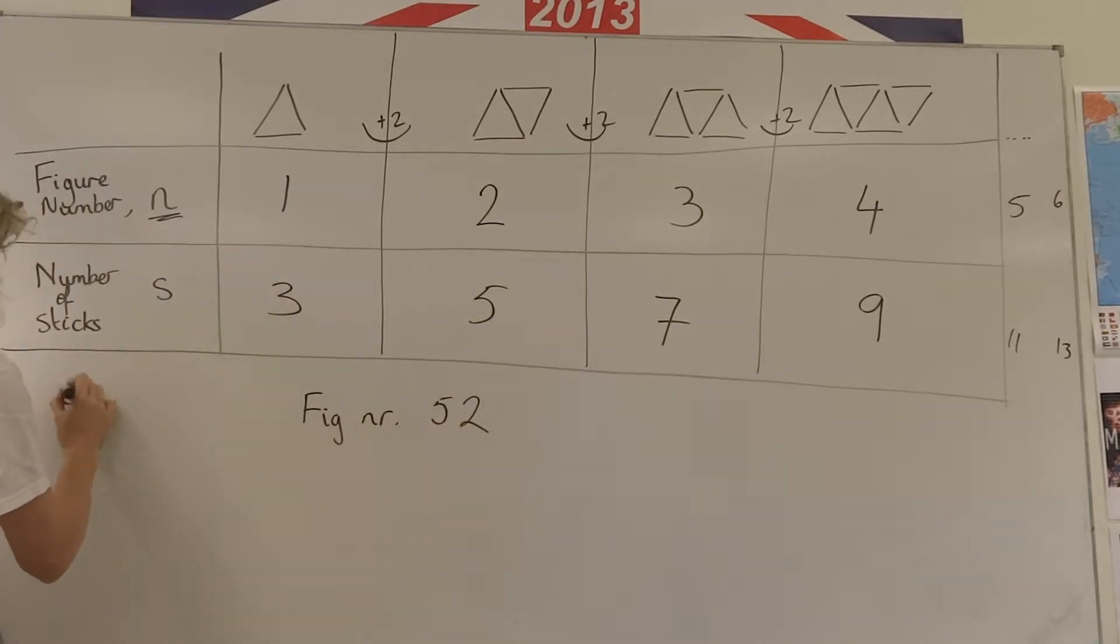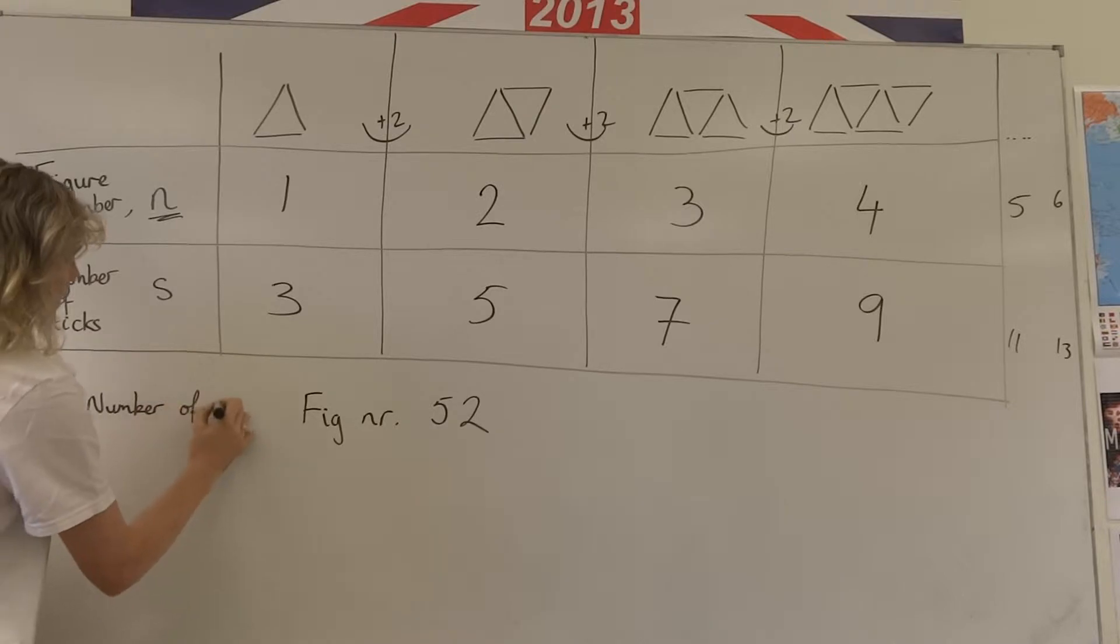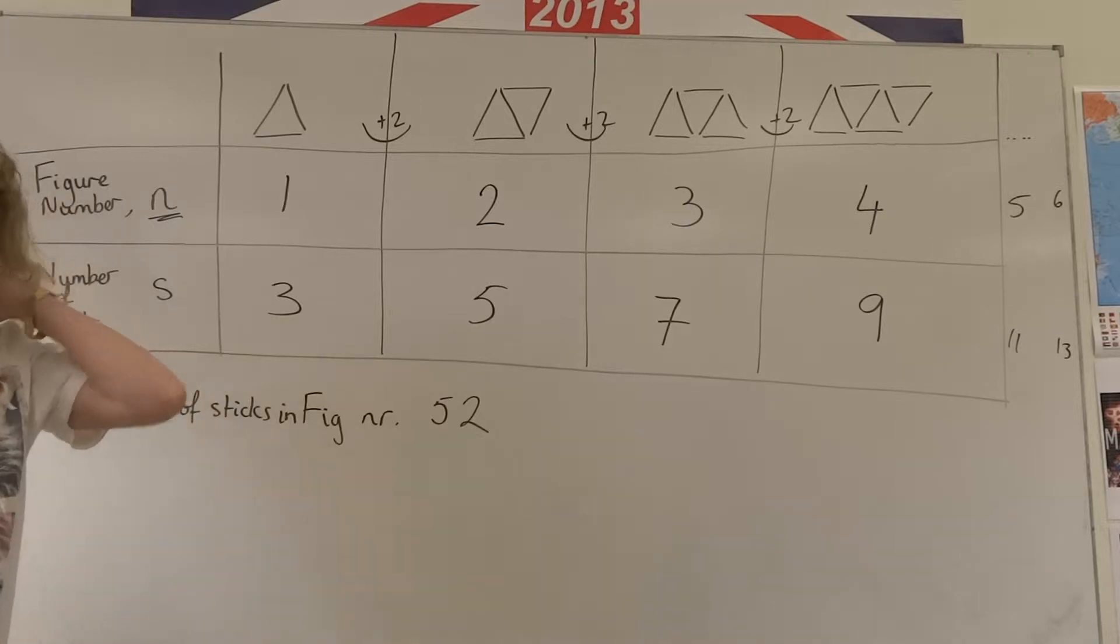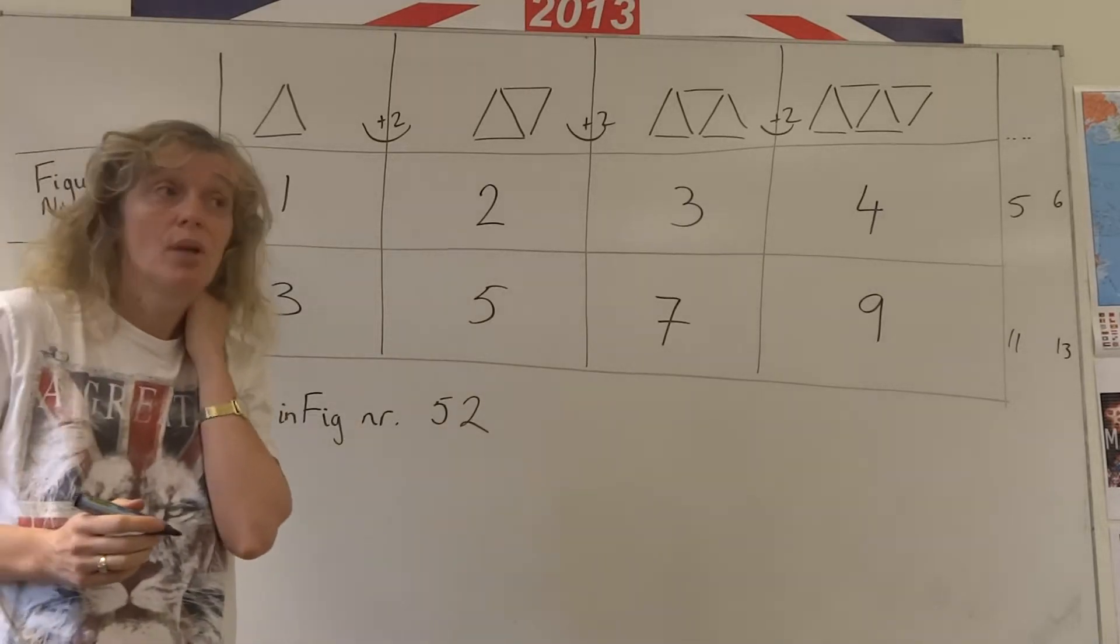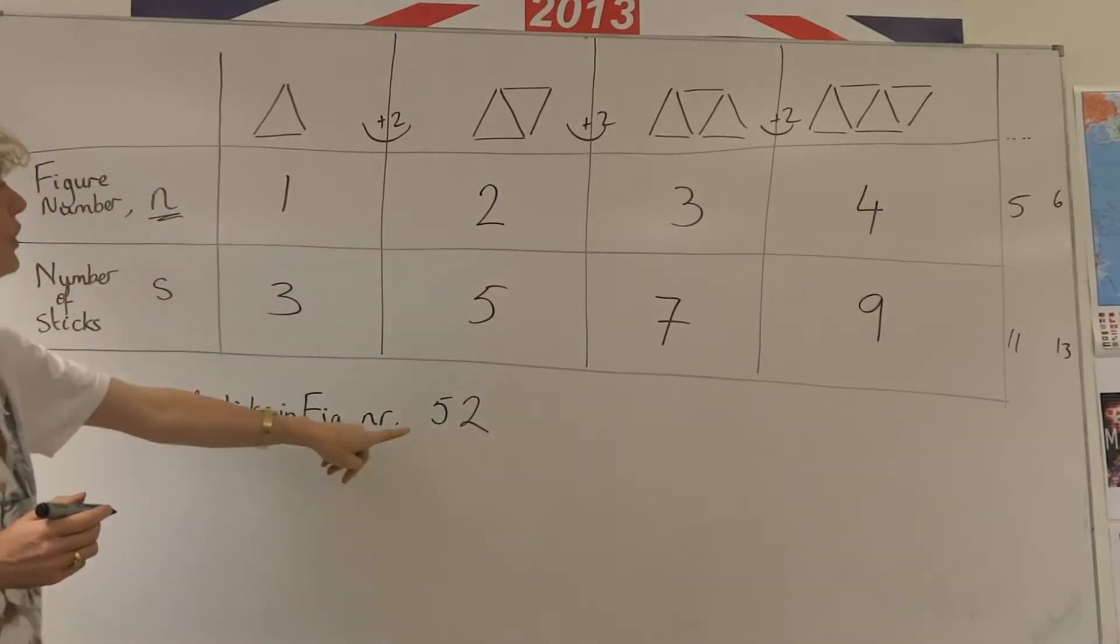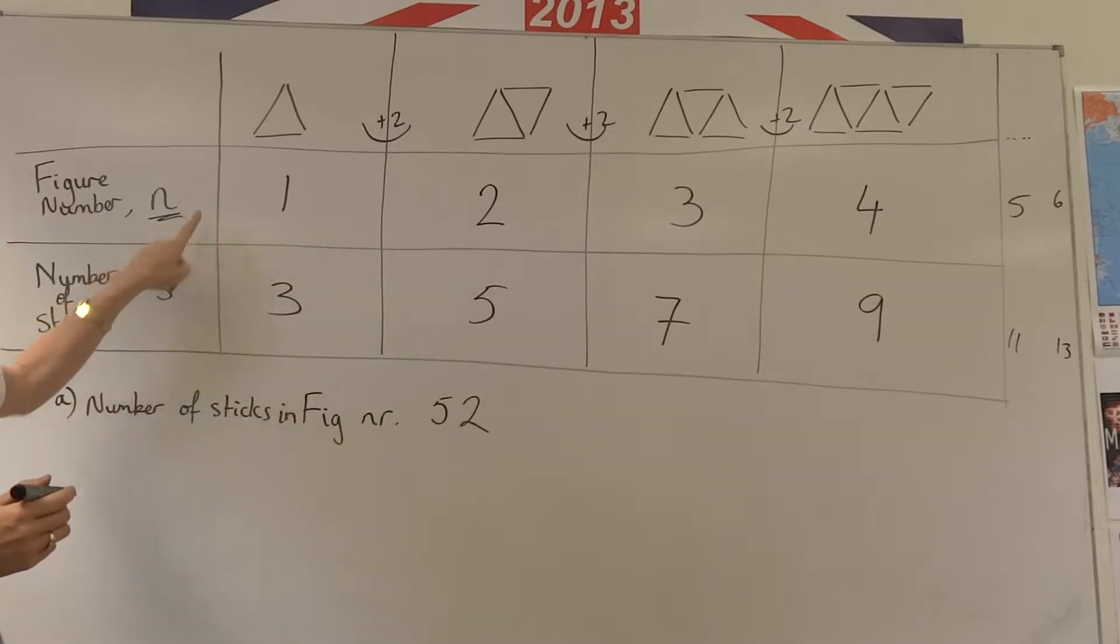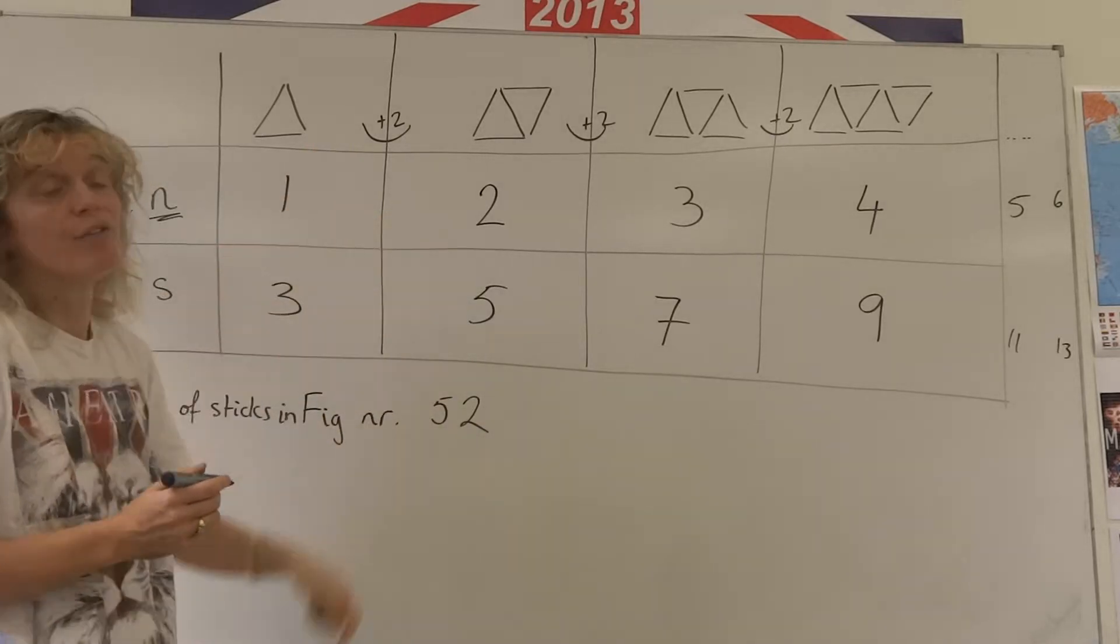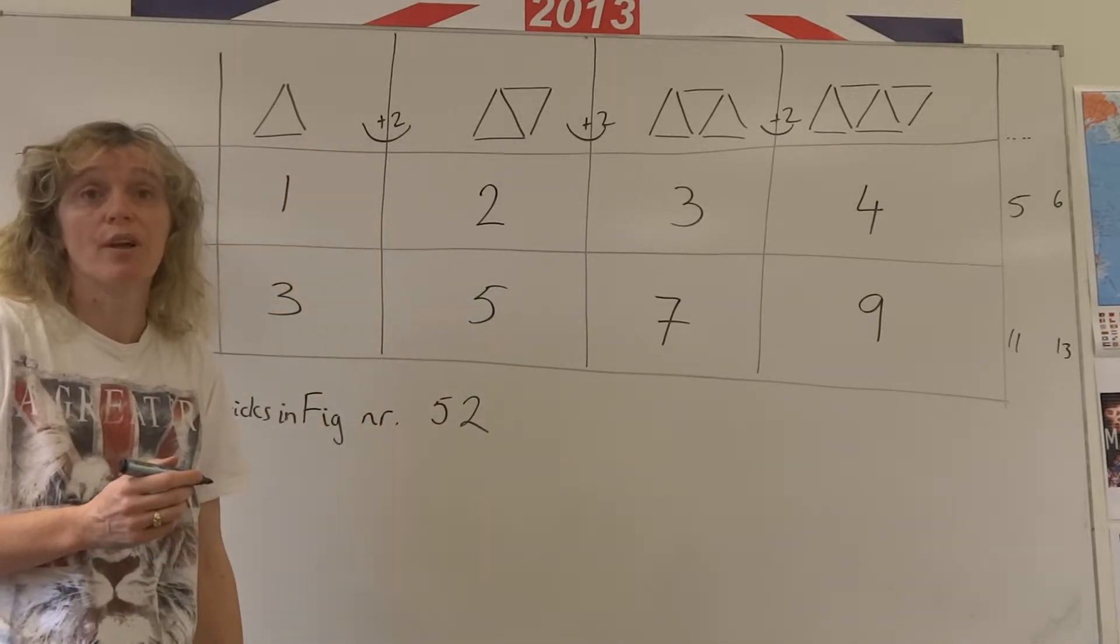So number of sticks in figure number 52. We would need a formula. We'd need to know how can I go directly from n to number of sticks. And I could add two to three 52 times but it wouldn't be very effective.